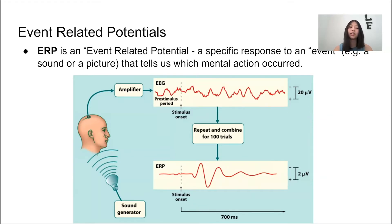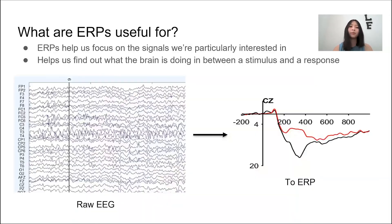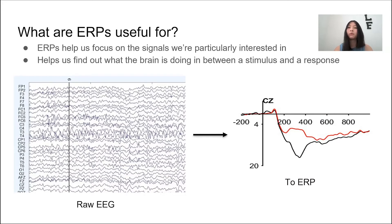We'll repeat these trials over and over and then through processing and averaging techniques, we'll time lock the signal to when the event happened and then extract the ERP. Like in this picture, it will result in a much smoother, much more specific signal that can be further analyzed. Now, why do we do this? Raw EEG recordings show everything that's happening in the brain and it's hard to detect the specific signal we want, especially when we want to see the different responses to a specific event.